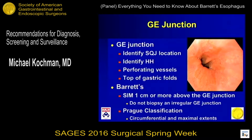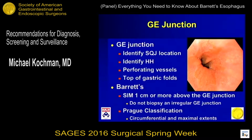The GE junction is really difficult to identify endoscopically. We can identify the squamous columnar junction, identify a hiatal hernia, and look for the perforating vessels, which you can see extending under the squamous epithelium and down into what is arguably a hiatal hernia — that is the area we worry about having Barrett's esophagus. We also look for the top of the gastric folds, and insufflated or desufflated stomach can affect that. We're looking for specialized intestinal metaplasia one centimeter or more above the GE junction. Do not biopsy an irregular GE junction — that's a critical issue we'll come back to.